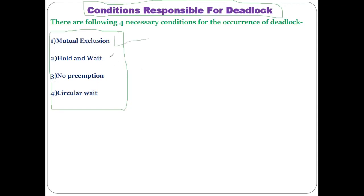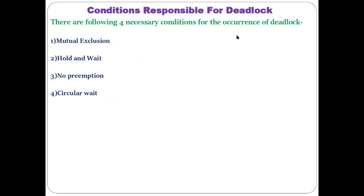The four conditions are: first, Mutual Exclusion; second, Hold and Wait; third, No Preemption; and fourth, Circular Wait. Each of these conditions will be discussed in detail with examples, as these are the conditions responsible for deadlock in a computer system.